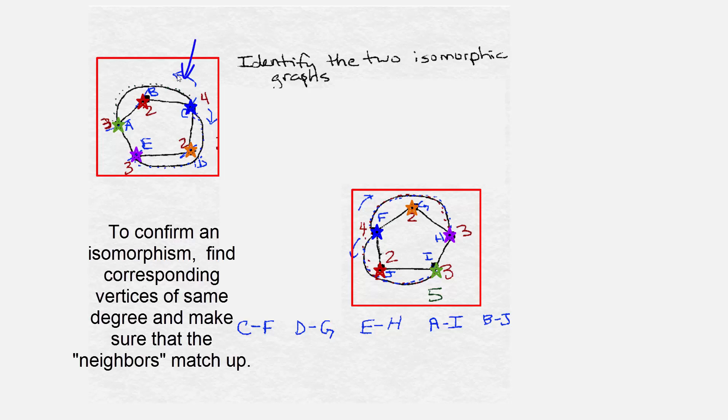Also notice that from B we could get back to C, the 2 to the 4, degree 4. And over here from J, we could get back to F, which was also our degree 4. So C matched up with F, which was degree 4 to degree 4. D matched up with G, which both of these were degree 2. E matched up with H, both of these were degree 3. A matched up with I, degree 3 as well. And B to J, degree 2.